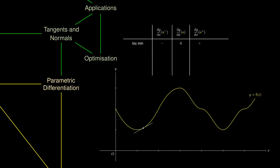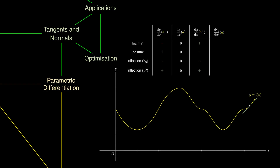Likewise, for a local maximum, the gradient to the left of the turning point is positive and to the right is negative. However, sometimes the gradient remains negative on both sides — meaning the stationary point is a point of inflection. Similarly, if the gradient remains positive on both sides, we obtain another stationary point of inflection. If finding derivatives were easy, we could calculate the second derivative — the derivative of the first derivative. At a local minimum the gradient increases from negative to positive, so the second derivative is positive. At a local maximum it decreases from positive to negative, so the second derivative is negative. This is known as the second derivative test for local extrema.